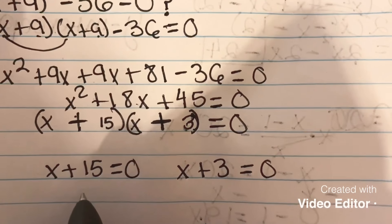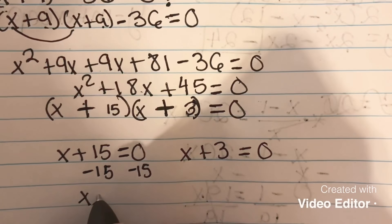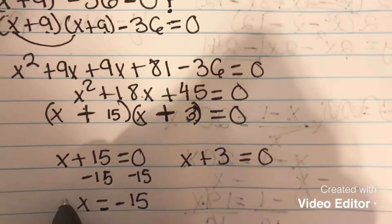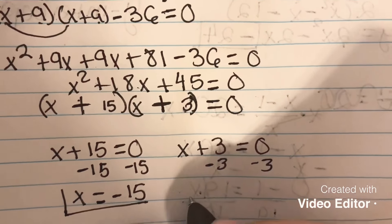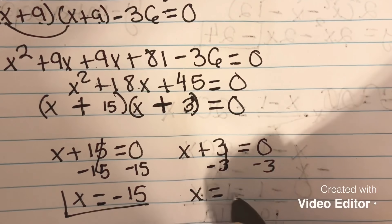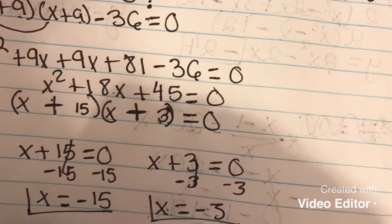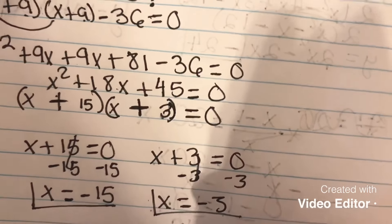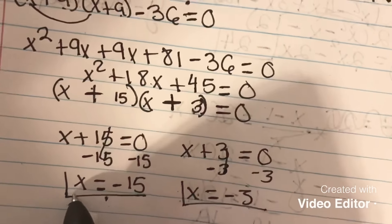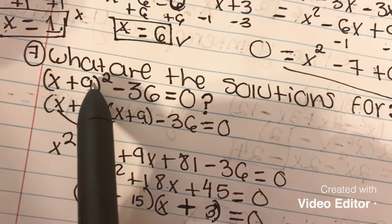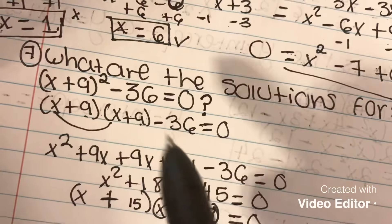Setting each factor equal to zero: x plus 15 equals 0 gives x equals negative 15, and x plus 3 equals 0 gives x equals negative 3. These two are our values of x. To check, we can substitute these values back into the original equation (x plus 9) squared minus 36 and verify it equals zero.